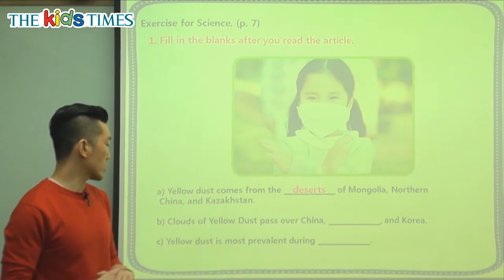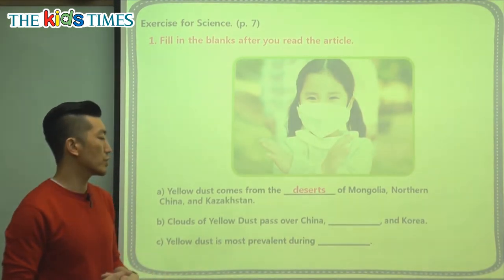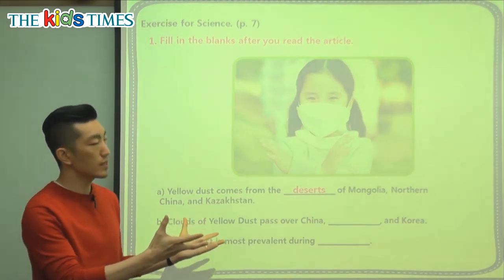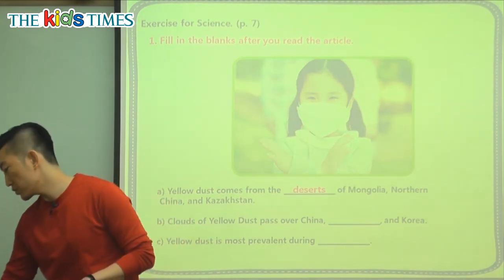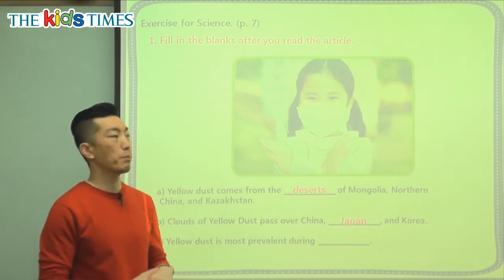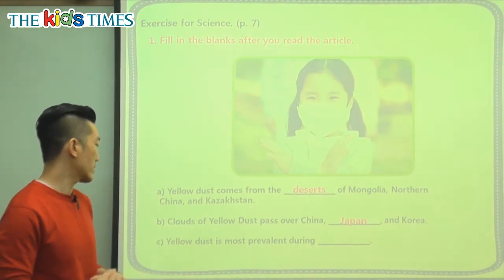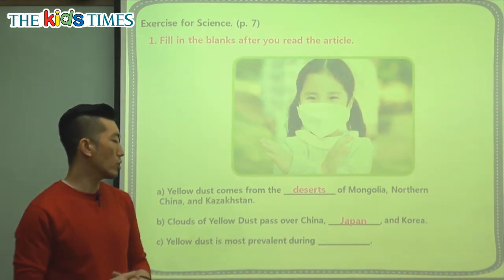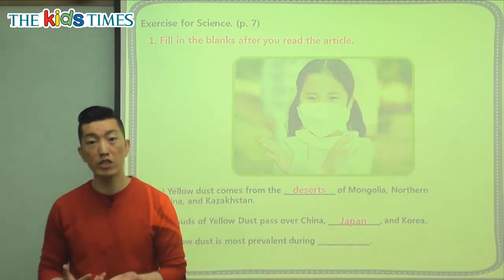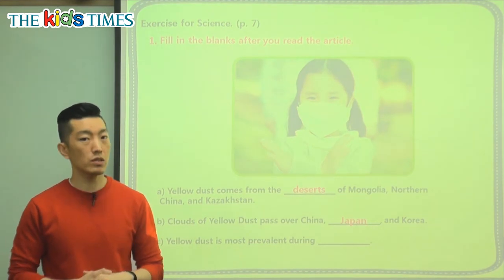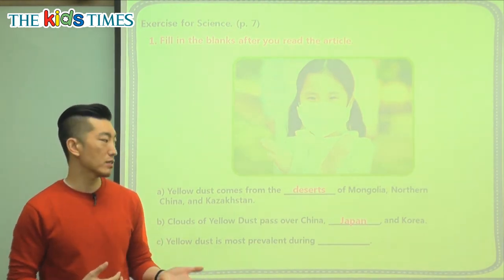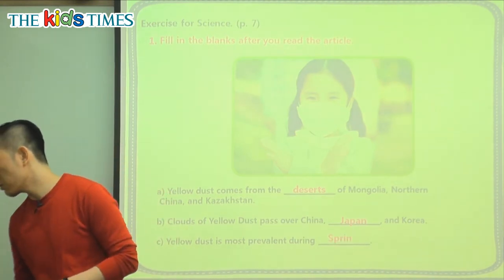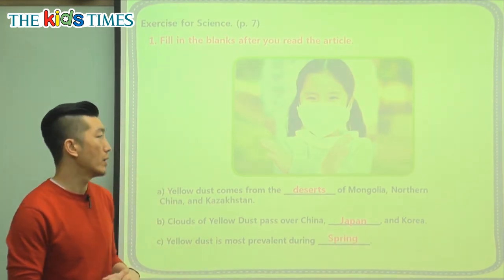The next question says: clouds of yellow dust pass over China, somewhere else, and Korea — so where else do these clouds pass through? That's right, they also pass through Japan. So this area of Asia is where the yellow dust sweeps through. The last question: yellow dust is most prevalent during which season? Not in winter, not in the hot summer — we see it right now in the springtime.